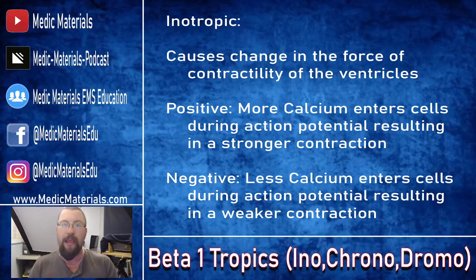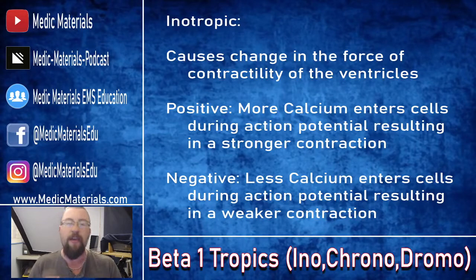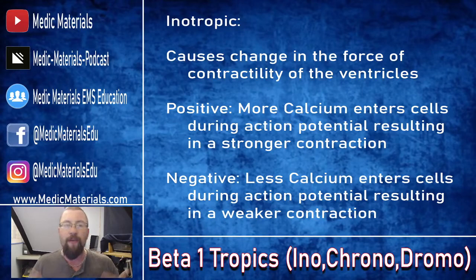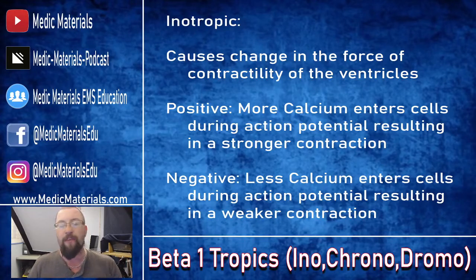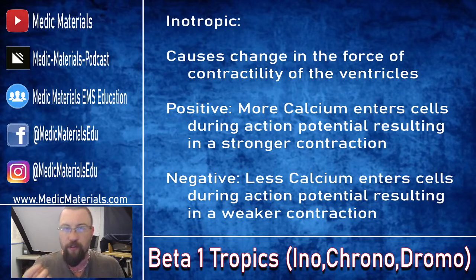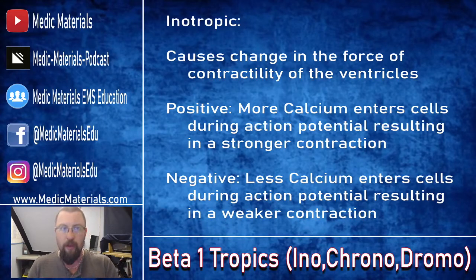This applies to both ventricles — not just the left or the right, but both. It's going to cause an increase or decrease in the force or strength of contractility depending on whether the drug has a positive or negative response. A positive inotropic drug causes more calcium to enter the cells, resulting in a stronger ventricular contraction. A negative inotropic drug causes less calcium to enter the heart muscle cells, producing a weaker contraction. Remember, these all play on cardiac output — more cardiac output with positive changes, less with negative changes.